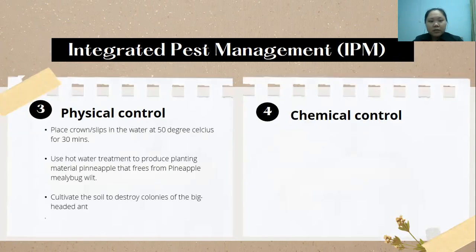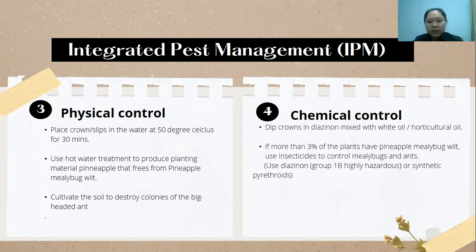For physical controls, we can place the pineapple crown in water at 50 degrees Celsius for 30 minutes to ensure planting materials are free from the pineapple mealybug. We can also cultivate the soil to destroy ant colonies, since ants help spread the mealybug.